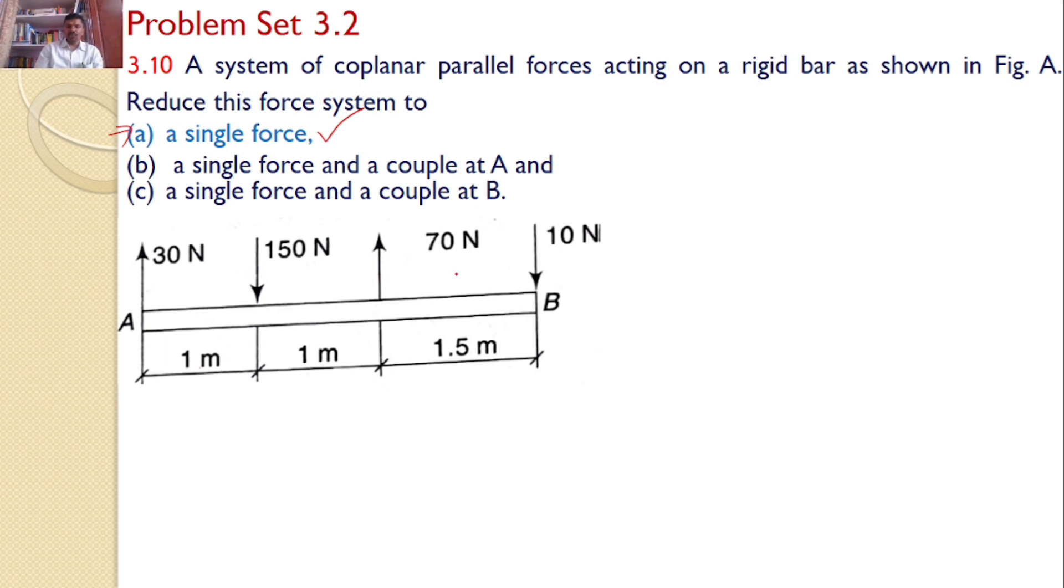For that, I will calculate the net force. I will consider upward directions as positive forces and downward forces as negative forces. Hence, I will calculate net force: 30 minus 150 because it is acting downwards, plus 70 because it is acting upwards, minus 10, which gives minus 60. That means all these four forces I can replace with a single force that is 60 Newtons downward force.